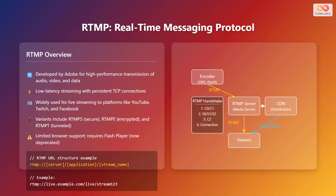Next, let's explore Real-Time Messaging Protocol, or RTMP. RTMP was developed by Adobe for high-performance transmission of audio, video, and data. It is characterized by low-latency streaming, achieved through persistent TCP connections. This protocol has been widely used for live streaming to platforms like YouTube, Twitch, and Facebook. There are several variants of RTMP, including RTMP-S for secure transmission, RTMP-E for encrypted transmission, and RTMP-T for tunnel transmission through firewalls. Note that it has limited browser support and requires Flash Player, which is now deprecated.